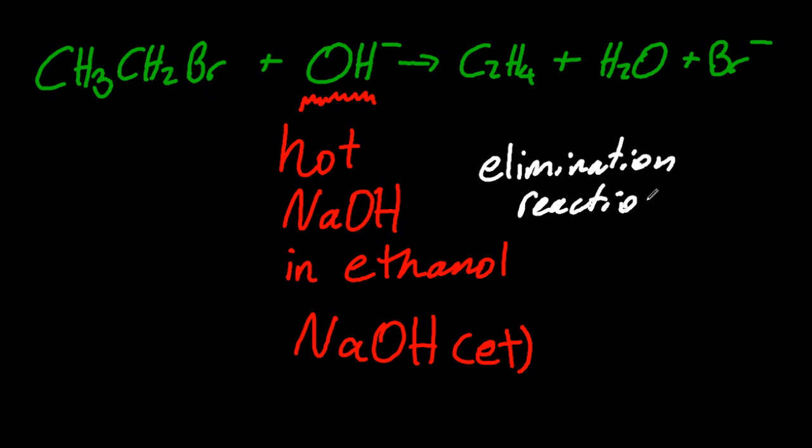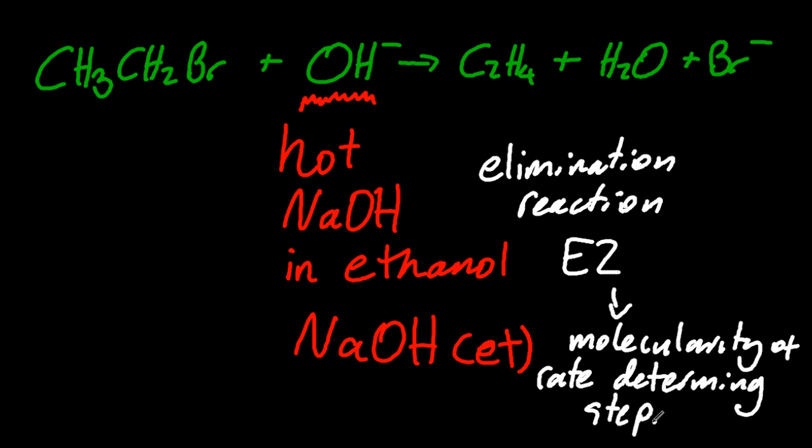So E2, which means the molecularity of the rate-determining step, is two. There are two reactants in the rate-determining step. Well, there's only one step. So there we go.